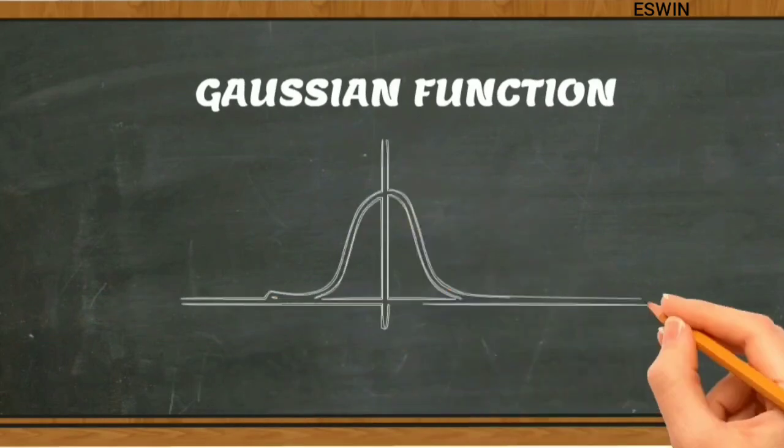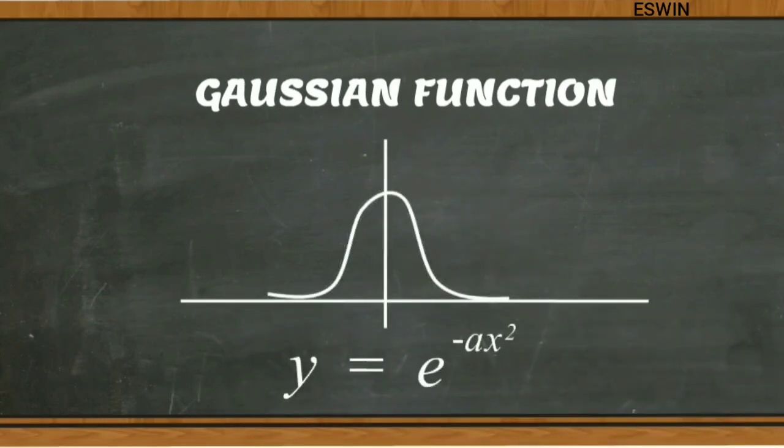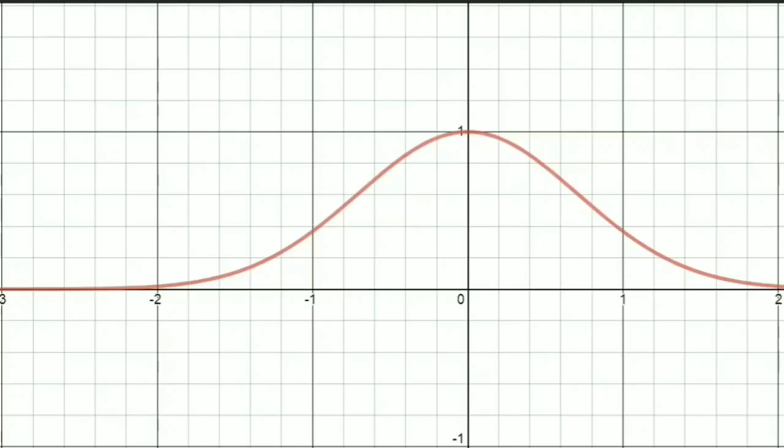The first integral with broad application in quantum mechanics is the Gaussian function. A typical Gaussian function is described by the equation y equal to e raised to minus ax square. The Gaussian function has a familiar bell-shaped curve.